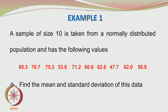We have a sample of size 10 taken from a normally distributed population. I do not know what these numbers represent — they look more like weights of people. The values are: 69.3, 76.7, 75.3, 53.6, 71.2, 60.6, 62.8, 47.7, 62, and 58.9.